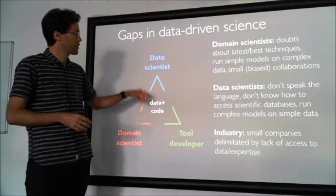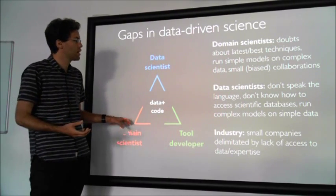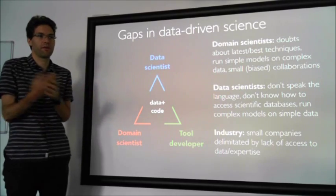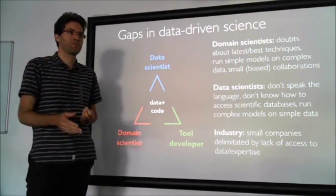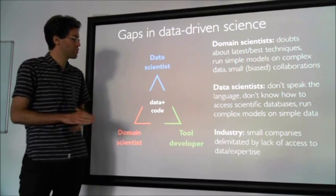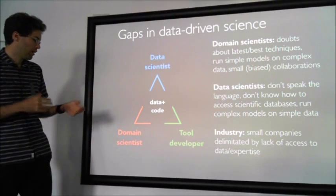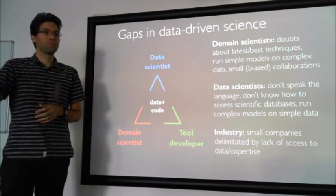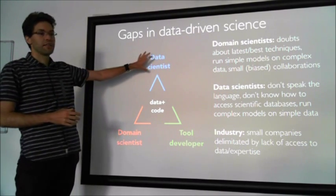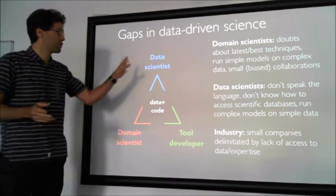But there are gaps. The domain scientist knows some machine learning and statistics, but is not sure about the latest and best techniques being developed. Why? Because they're in papers, which are very hard to read. You need to spend a lot of time in the literature to know what the best techniques are. You also need to experiment a lot with code, if you can get the code in the first place. So it's really hard for them to know which are the best techniques. The result is that while they have hugely complex datasets, they try simple models on them. They do collaborate with data scientists, but this is a very small-scale collaboration — not the same as having access to the whole knowledge of the data science community.